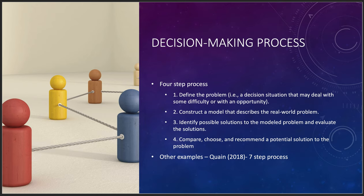There are two ways of looking at the decision-making process. We're talking about how humans make decisions because we want computers to make decisions the same way. There's a four-step process and a seven-step process. In the four-step process: first, define the problem — a decision, situation, challenge, or opportunity. In business, a challenge means fixing something broken; an opportunity means doing something exciting like increasing visibility or market share.